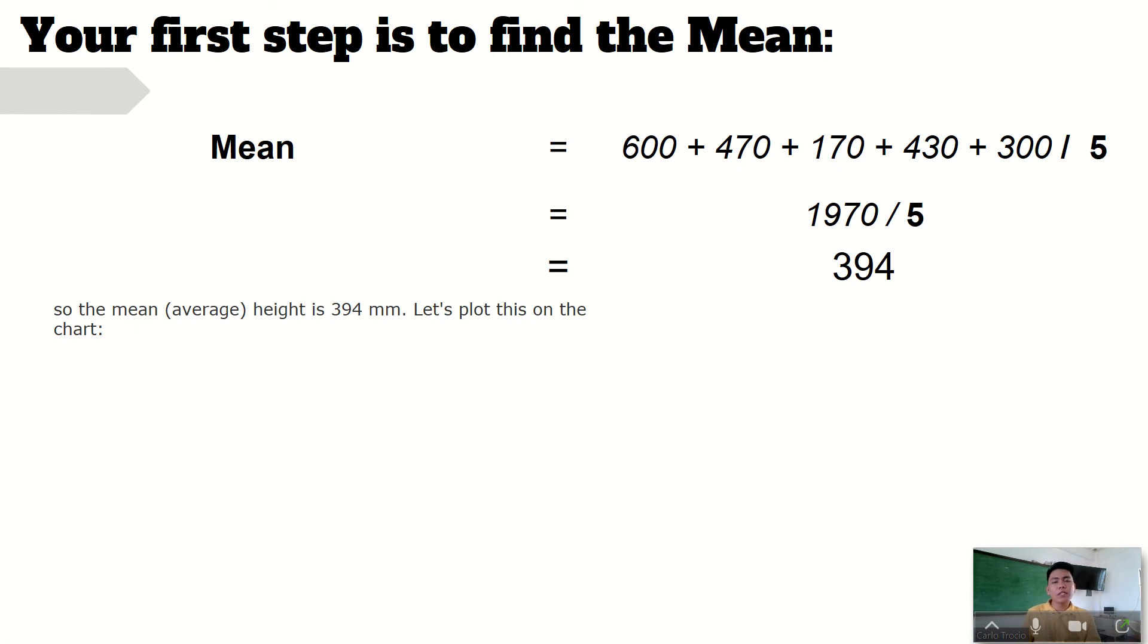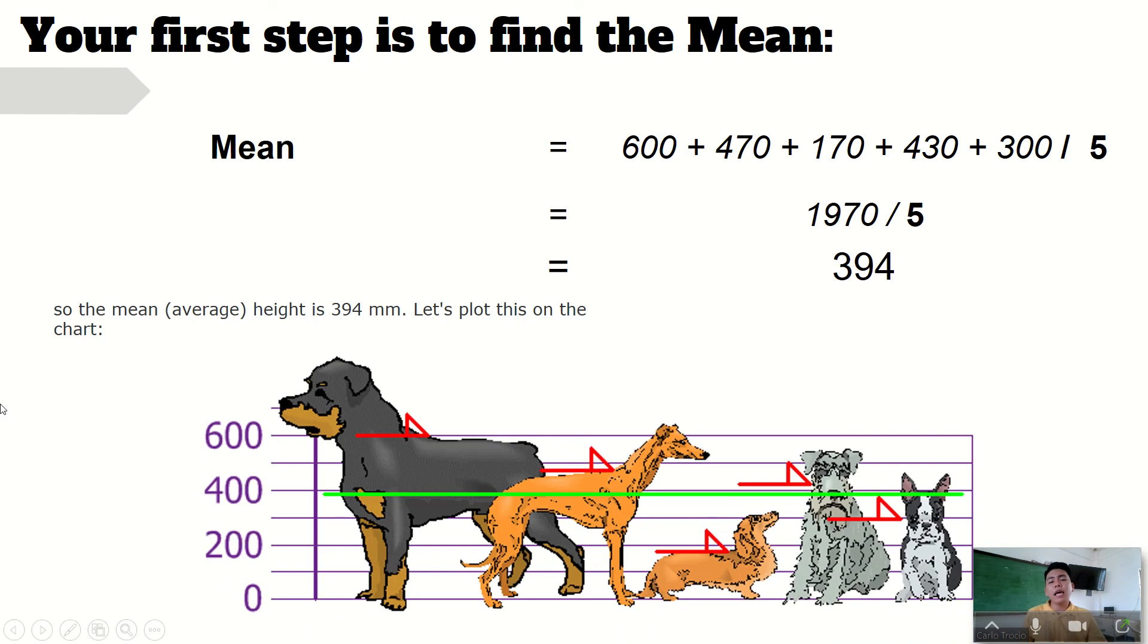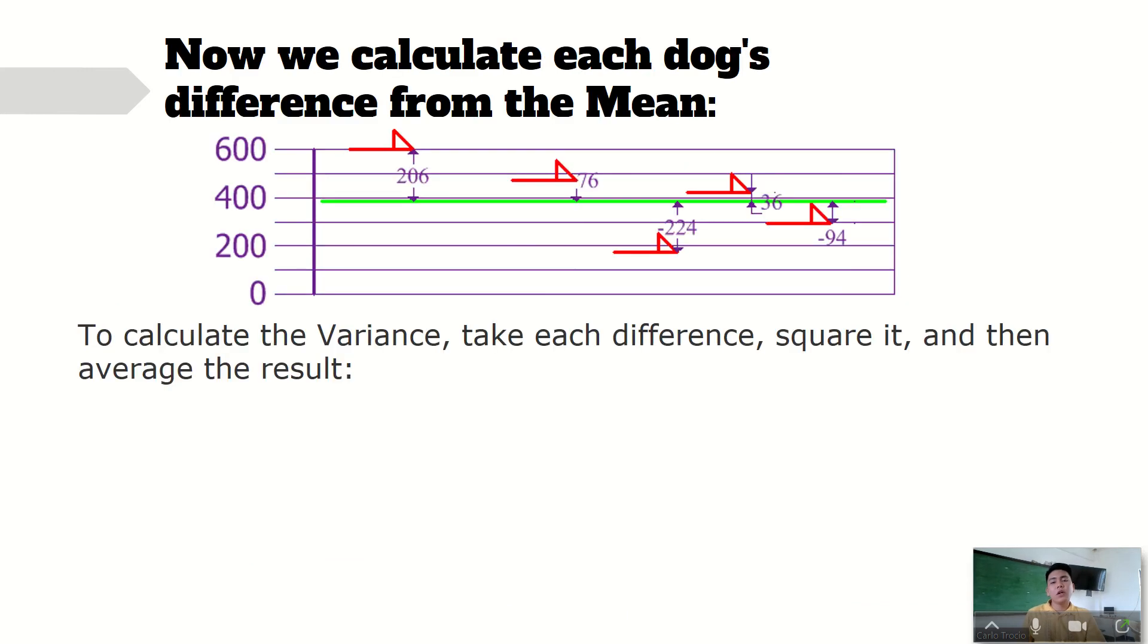You will have 394. We will be using this 394 later in finding the variance. And this green line here is what we call the mean. This is the center, the average height of the dogs that we have here in this example.